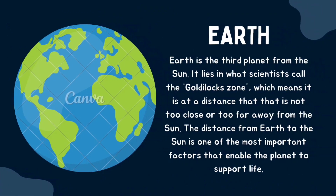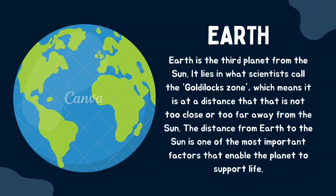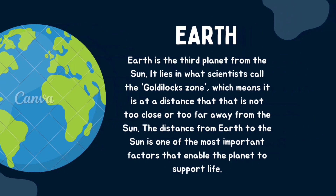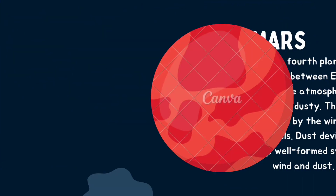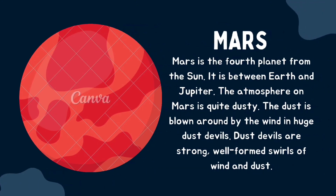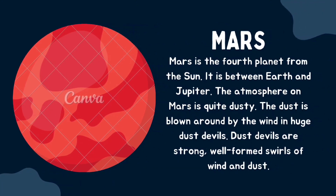Now let's talk about Earth. Earth is the third planet from the sun. It lies in what scientists call the Goldilocks Zone, which means it is at a distance that is not too close or too far from the sun. The distance from Earth to the sun is one of the most important factors that enables the planet to support life. It is the only planet where life exists.